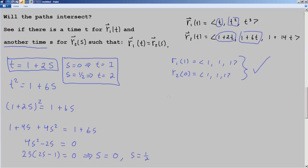And then we'll do the same thing for T equals 2 and S equals 1 half. So r₁ of 2 equals 2, 4, and 8. And I'm getting that from this equation of what r₁ is. And then r₂ of 1 half equals, we're going to plug in 1 half here. And that's going to be 2, 4, and 8. So yes, here's another collision point. These are the two points where the paths intersect. Paths of particles intersect at these points.